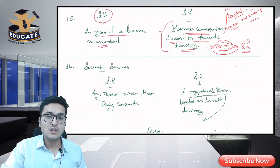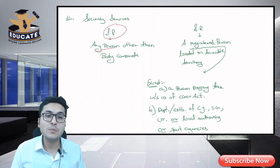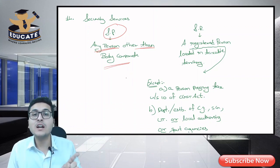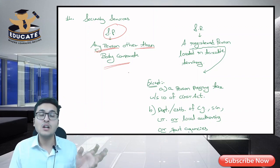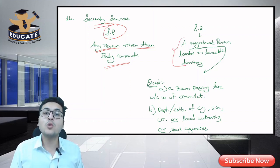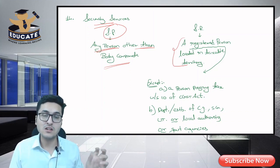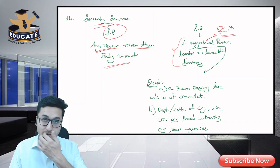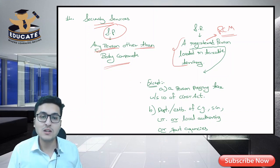Next: security services. Who is the service provider? Any person other than a body corporate. If the provider is a body corporate, forward charge applies. So any person other than a body corporate providing security services to a registered person located in taxable territory — the registered person pays tax under reverse charge. If the recipient is unregistered, RCM does not apply.